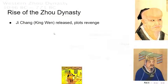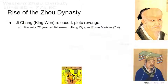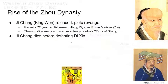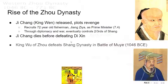Let's talk about the rise of the Zhou dynasty. After Di Xin releases King Wen, King Wen plots his revenge. First, he recruits a 72-year-old fisherman named Jiang Ziya, who becomes the prime minister. Through diplomacy and war, Ji Chang eventually controls two-thirds of the Shang empire. But he dies before he could launch his invasion against Di Xin. So it would have to be his son, King Wu of Zhou, who would defeat the Shang dynasty in the Battle of Mu Ye in 1046 BCE.